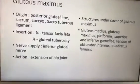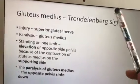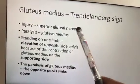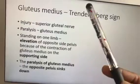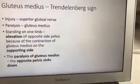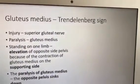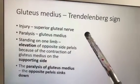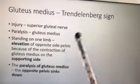The Trendelenburg sign is an important clinical question. Normally, when standing on one leg, the opposite side pelvis rises due to contraction of gluteus medius on the standing side. Gluteus medius is supplied by the superior gluteal nerve. If this nerve is injured, gluteus medius cannot contract, and instead of the opposite pelvis rising, it sinks down — this is called a positive Trendelenburg test. Note: there is also a Trendelenburg sign for varicose veins, which will be covered later.